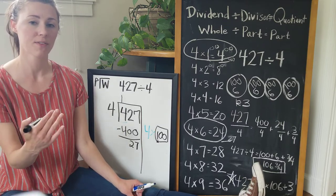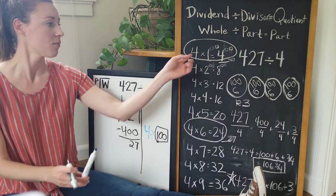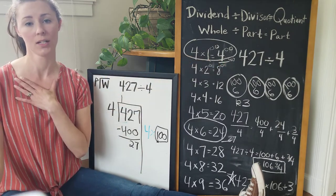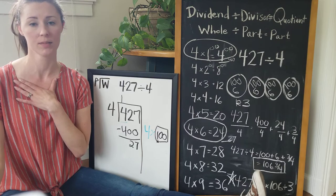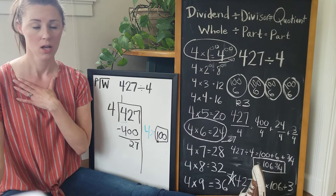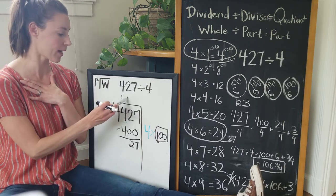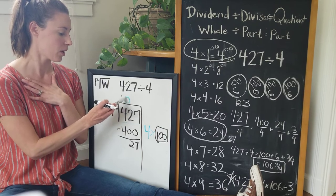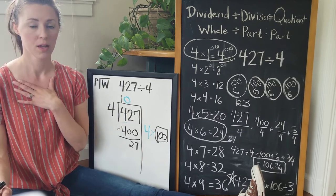If I moved on from my hundreds facts to my tens facts, right, four times 10 is 40. I only have 27 dollars, I can't give each child ten dollars because I don't have forty dollars. So I have used zero tens and I can go ahead and put a zero in the tens place value, or I can wait till the very end.